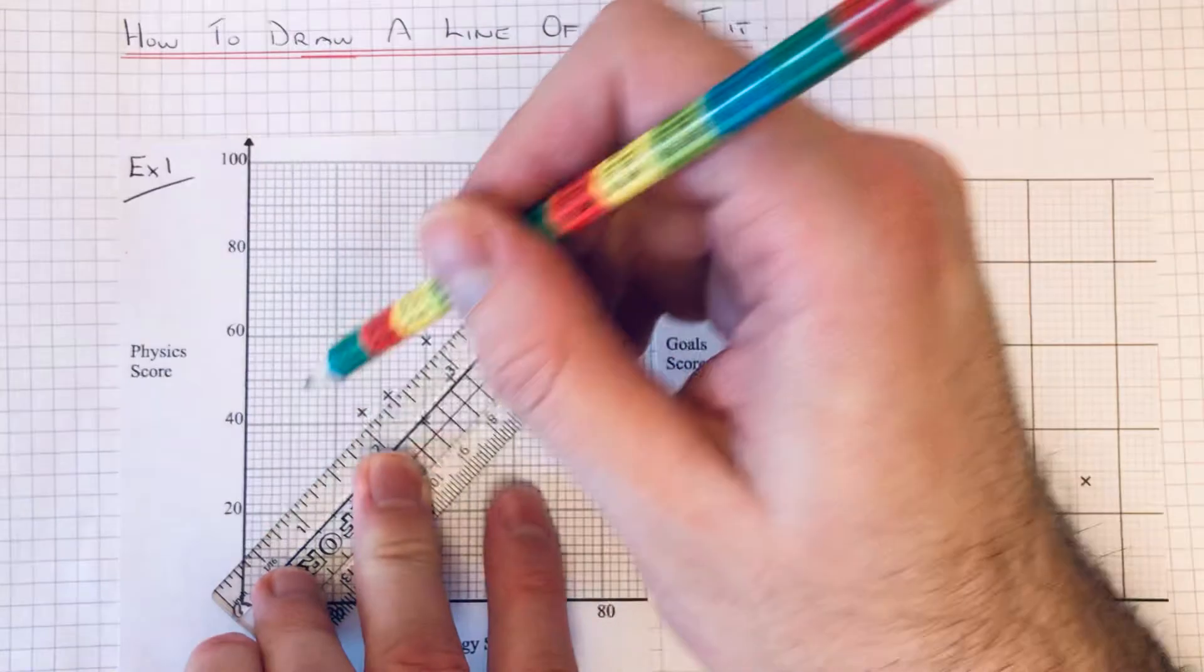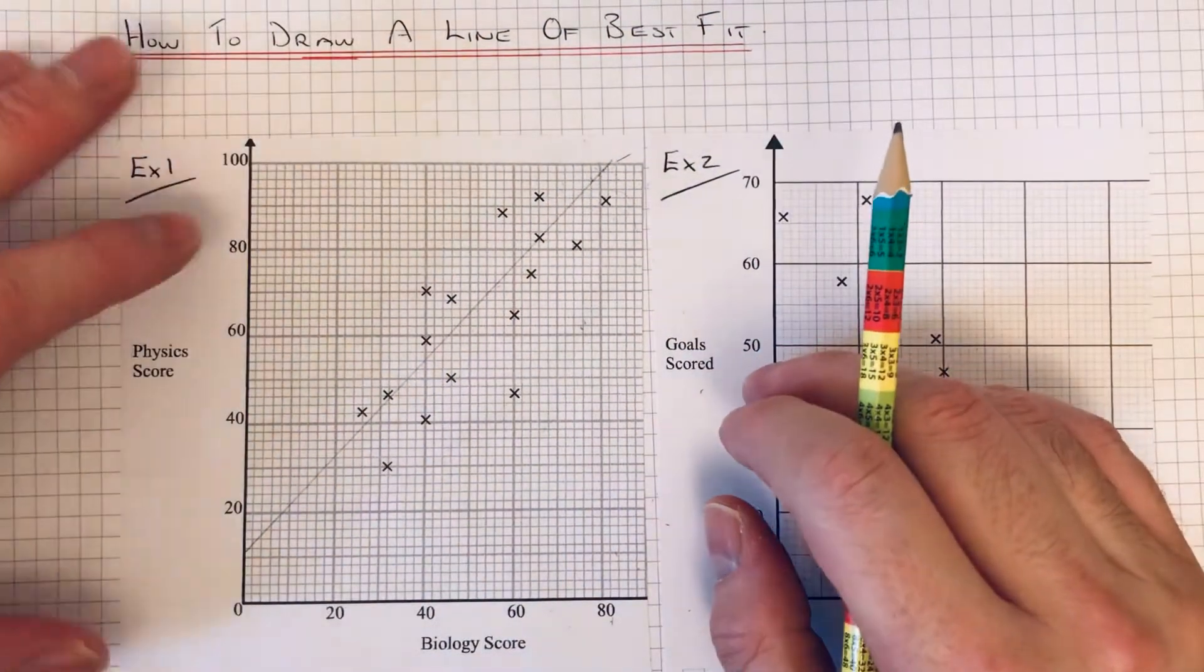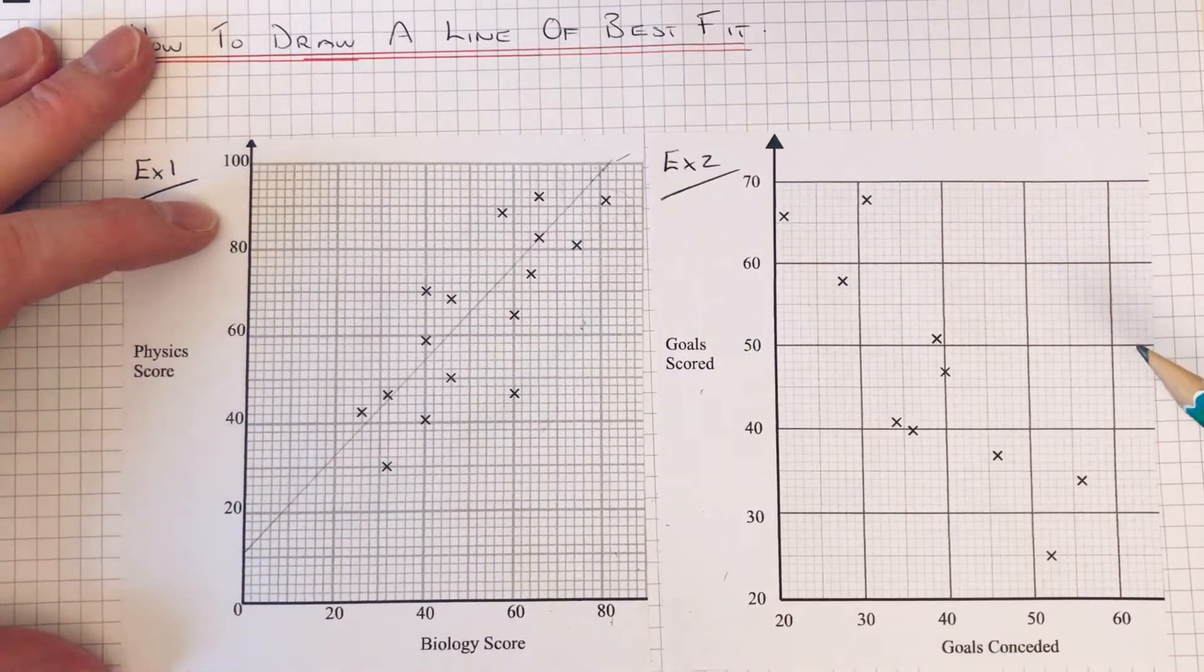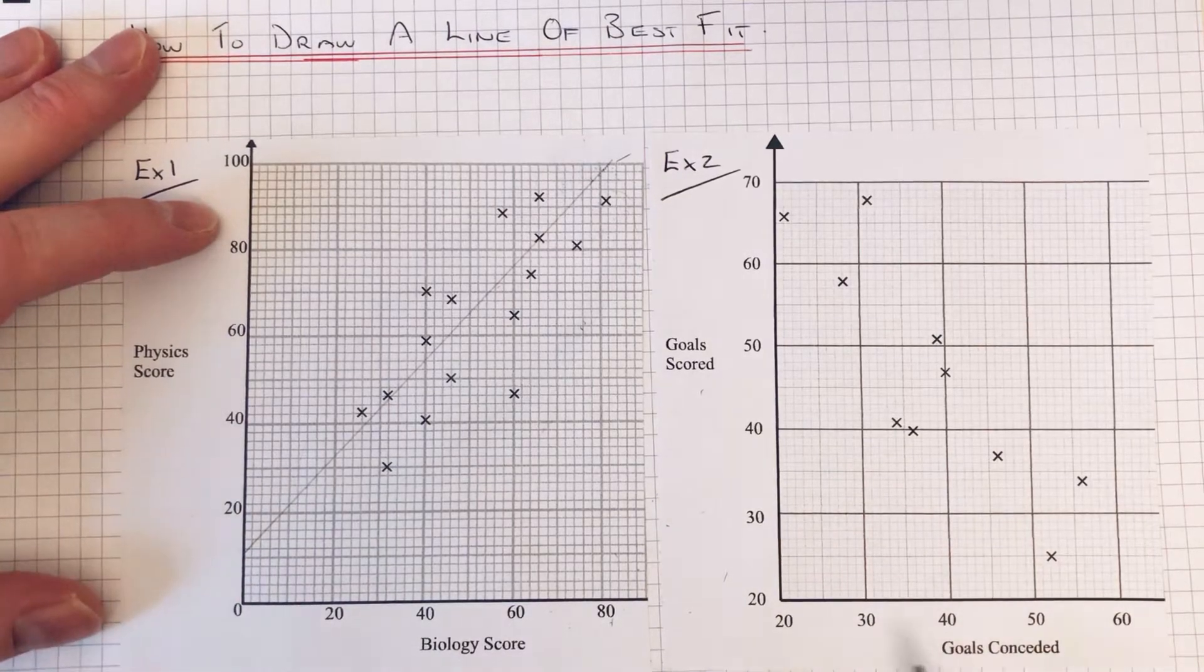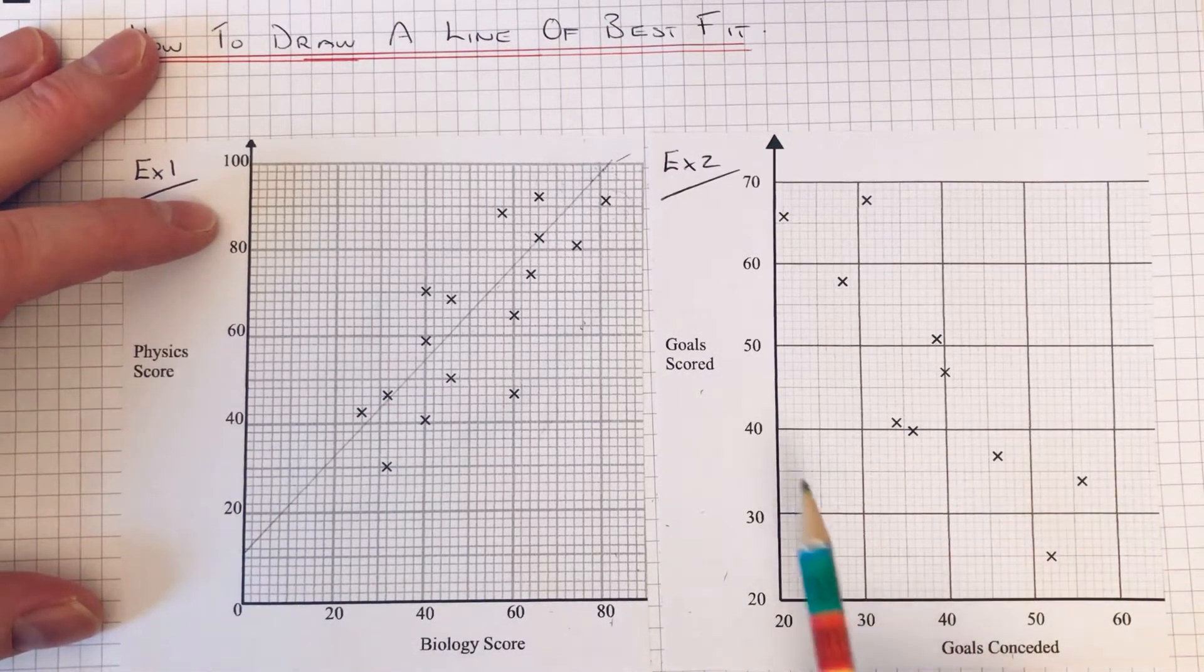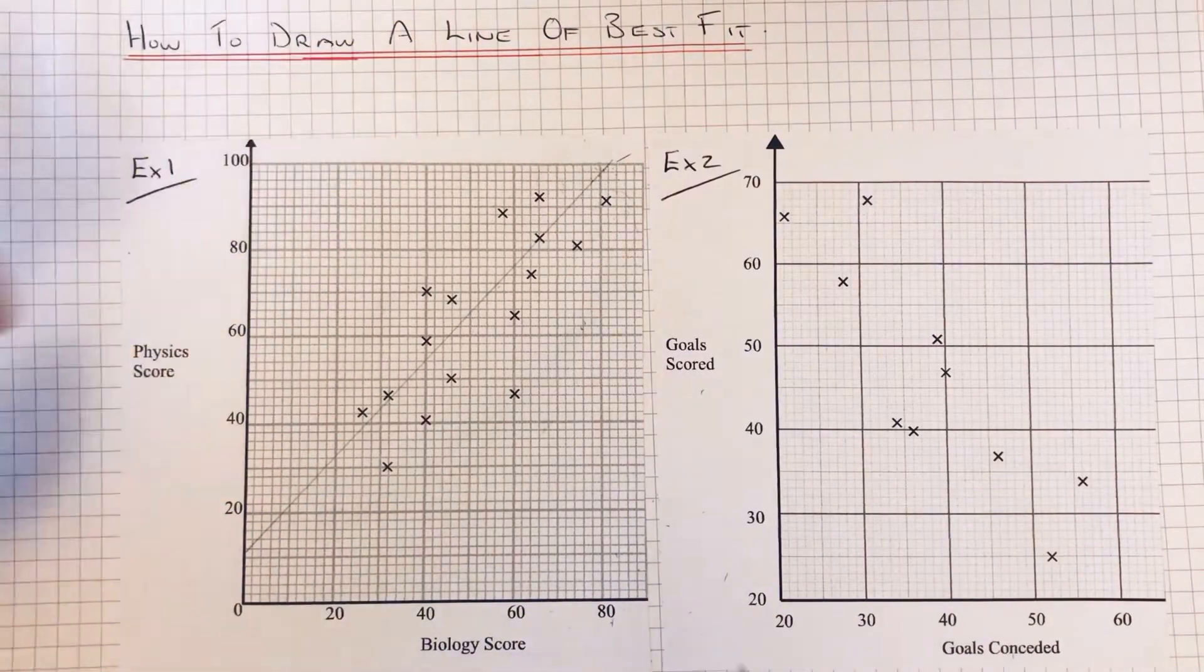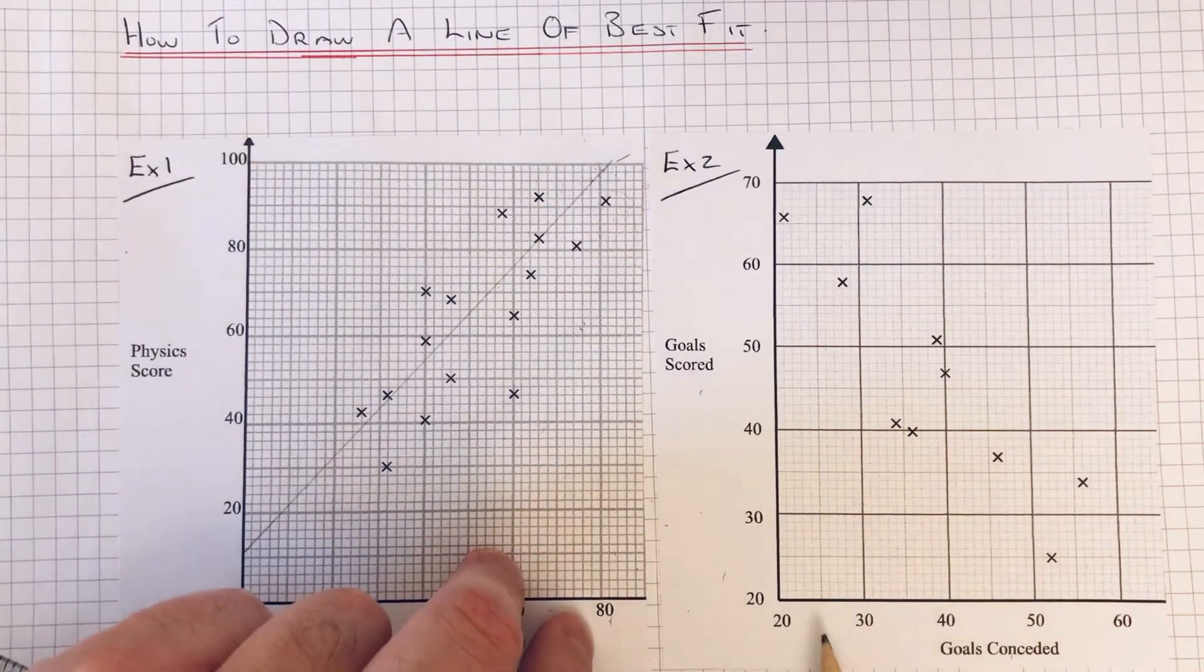So let's move on to example two. This time we have the number of goals conceded and the goals scored by a football team. As you can see, as the goals conceded increase, the goals scored decrease.